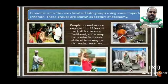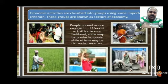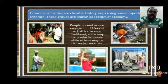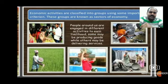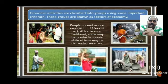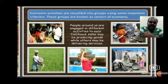In this lesson, as you can see in the picture, people are doing different activities — some are doing cultivation, some are giving service, some are doing work at the factory level. On the basis of the activities that people are doing, we can classify sectors into primary sector, secondary sector, and tertiary sector. Economic activities are classified into groups using some important criteria. These groups are known as the sectors of economy.